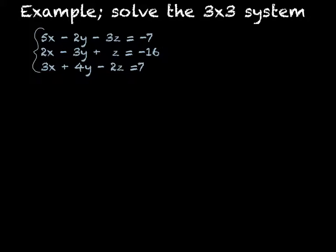There are several ways that we can solve this. In this case, I'm going to use equation 1 and equation 2 to start with. What you're going to do is pick any two equations and then eliminate a variable. So step one: pick two equations — number 1 and number 2.